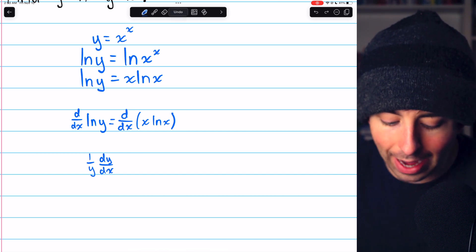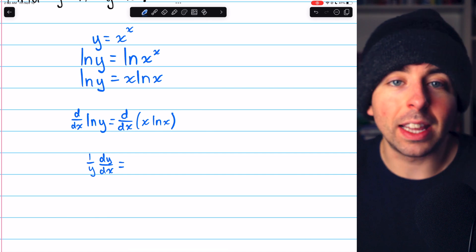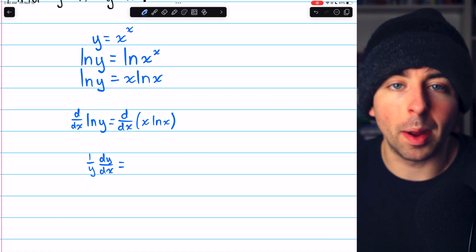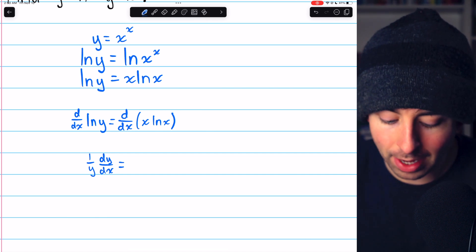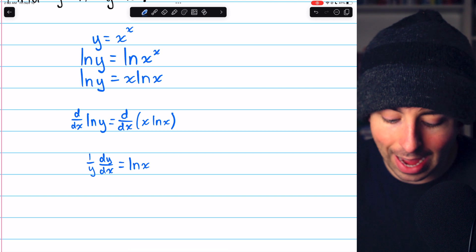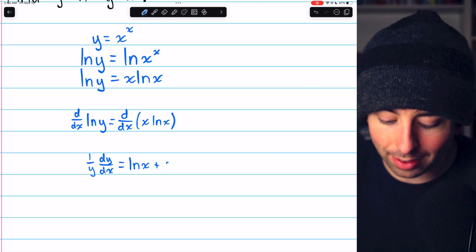On the right, the derivative of x ln x, we find that with the product rule, f prime g plus g prime f. That's going to be log x plus x times 1 over x.